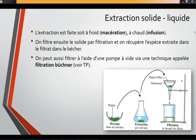On peut faire ce qu'on appelle une filtration Büchner, c'est-à-dire une filtration beaucoup plus intense, à vide, avec l'aide d'une pompe. On le développera en TP.